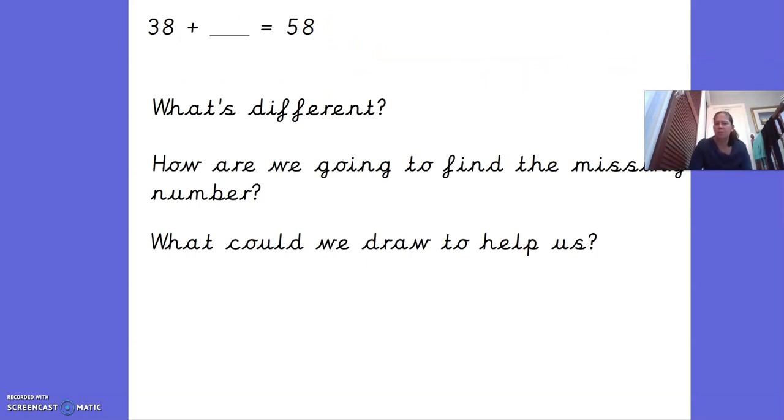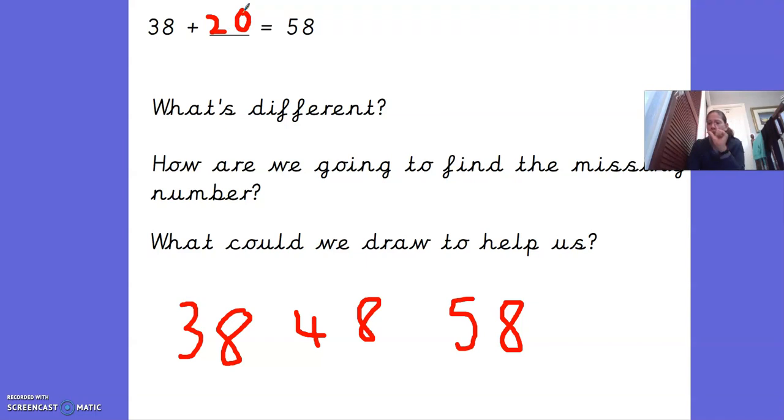38 plus something equals 58. Oh my goodness, they've missed a number out here. How are we going to find this out? What could we draw to help us? We could draw, have our number track. So 38. And then we need to get to 58. So 38, 48. So if I jump to 48, that would just be 10. I need to jump to 58. So I've added 20. Because 38, 48, 58. I've added two 10s. So I've added 20.